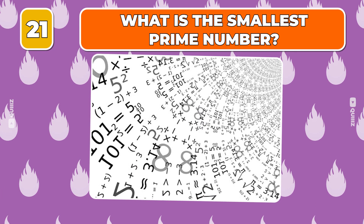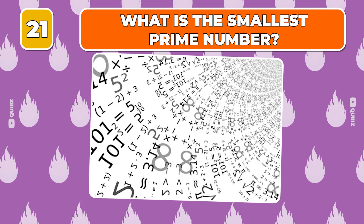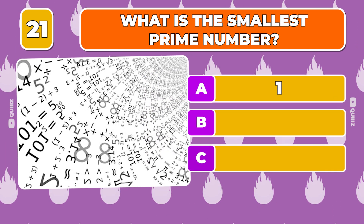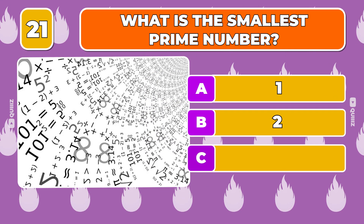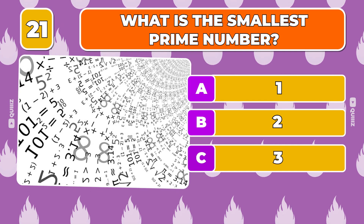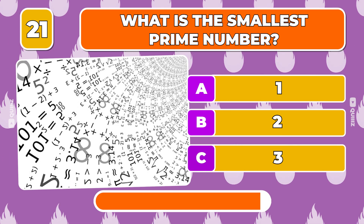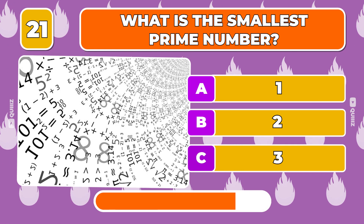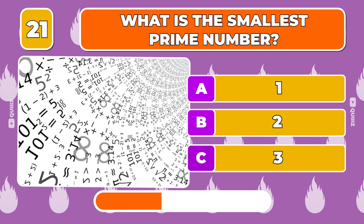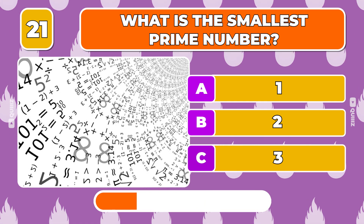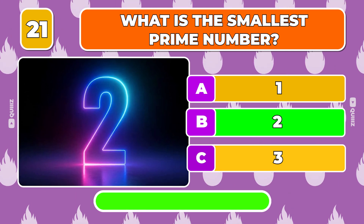Question 21. What is the smallest prime number? One, Two, Three. It is two.